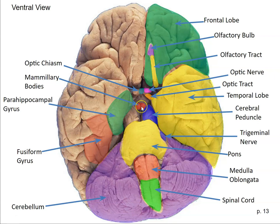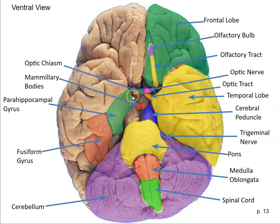Here we have the mammillary bodies, tightly interconnected with the hippocampus. This is part of a network known as Papez circuit, which is crucial for certain kinds of long-term memory. Also, if you follow the cortex medially, it kind of curls under and becomes the amygdala — so the amygdala is just on the other side of the parahippocampal gyrus here. We'll learn more about the amygdala later.